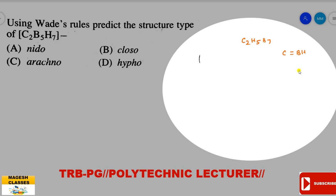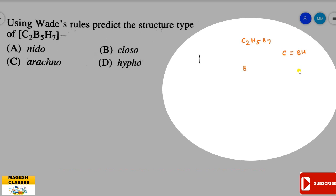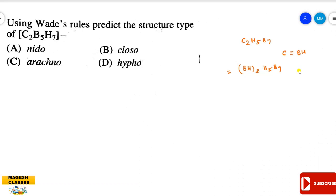Since C is equivalent to BH, C2B5H7 becomes B2H2 + B5H7, which equals B7H9. This simplifies to B7H7 with charge 2 minus. Since it has a 2 minus charge, it is closo type. The answer is option B.